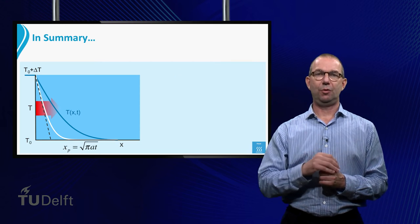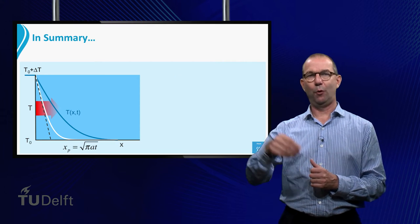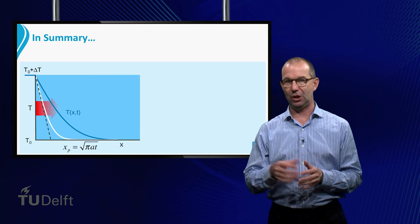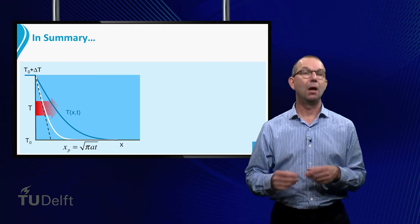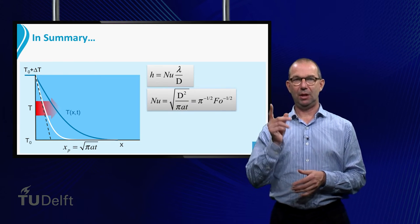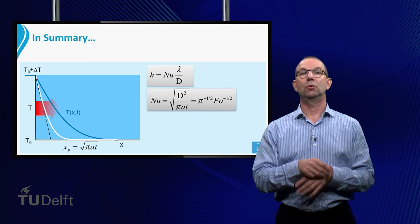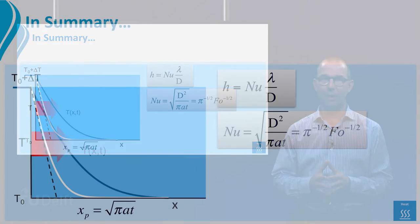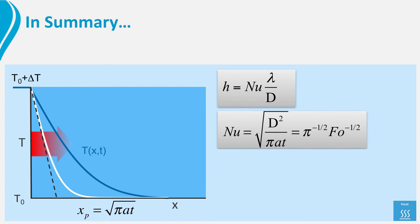We can of course write the flux to driving force relation also in terms of a heat transfer coefficient h, or preferably a Nusselt number. From the theory discussed here, Nusselt is a function of time, or written in its dimensionless form, Nusselt equals the square root of plate thickness d squared over pi AT.